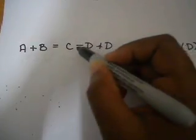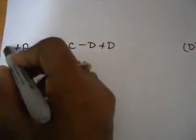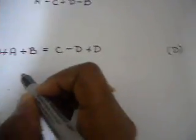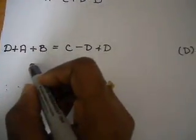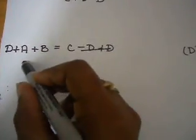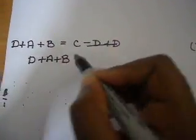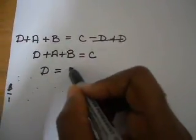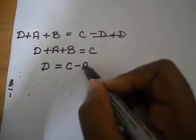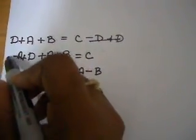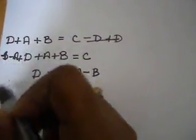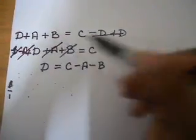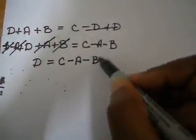For this next one, we want D, and D is negative on this side so we're going to add D to both sides to make it positive. After adding D and cancelling terms on both sides — subtracting A and subtracting B — we get D minus D cancels, and we're left with D equal to C minus B.